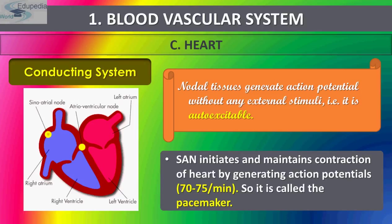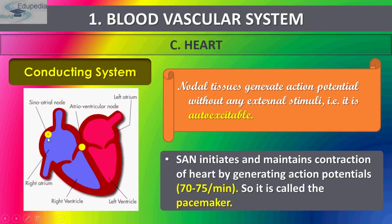This rate of 70 to 75 beats per minute is what we call the pulse of a normal human, and that is why the SA node is called the pacemaker — the one that generates the impulse and is auto-excitable.